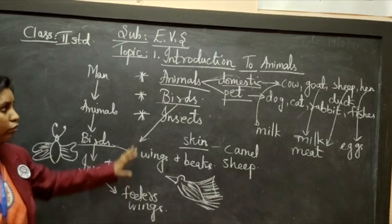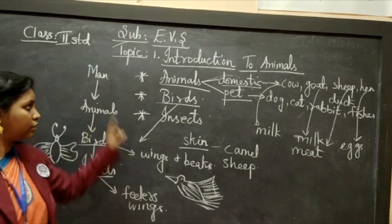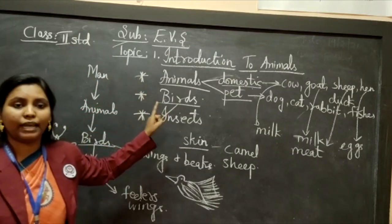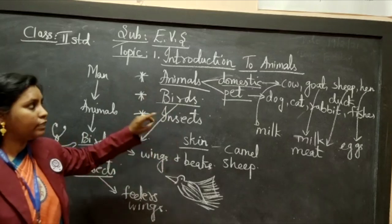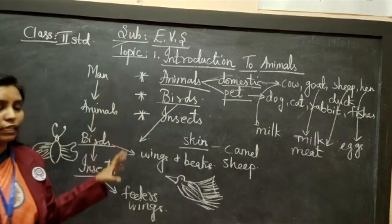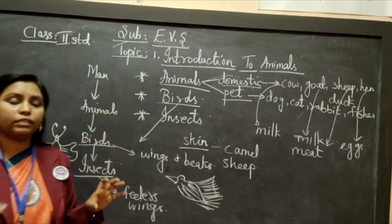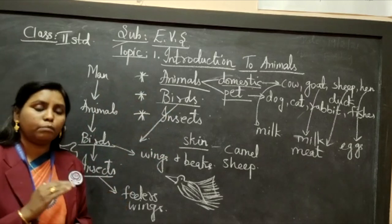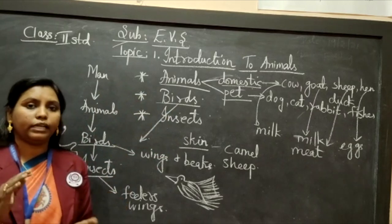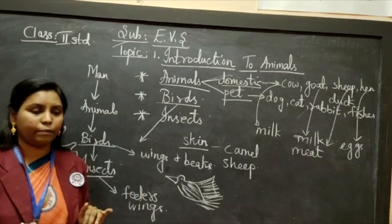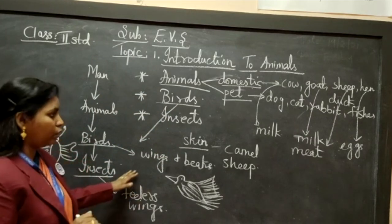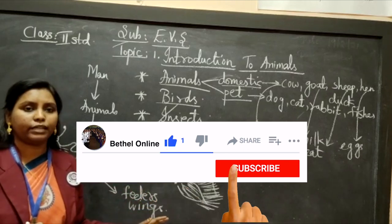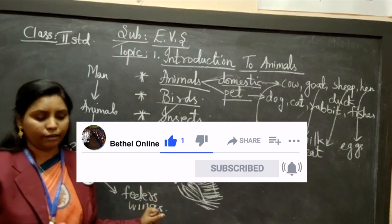So, all of you understood this? Animals, birds, and insects — all three are living creatures on earth, and in some or the other way, they are helping mankind. Hope you all have understood, children. Thank you for joining us. Take care.